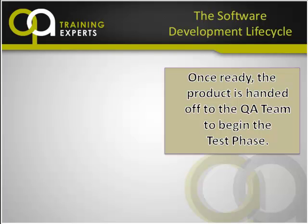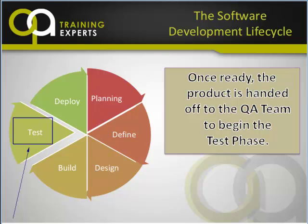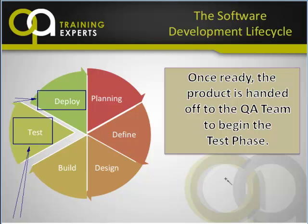Once ready, the product is handed off to the QA team to begin the test phase. Here's our pie chart again — here is the test phase. Notice that the test phase is almost the very last phase of the software development lifecycle. Right after testing comes deploy. The deploy phase is when the application goes out the door — it gets installed, and the users and the business start using the product. So our phase here is very important. Our job is to make sure it's going to actually work when it goes out the door, when the business starts to use it.